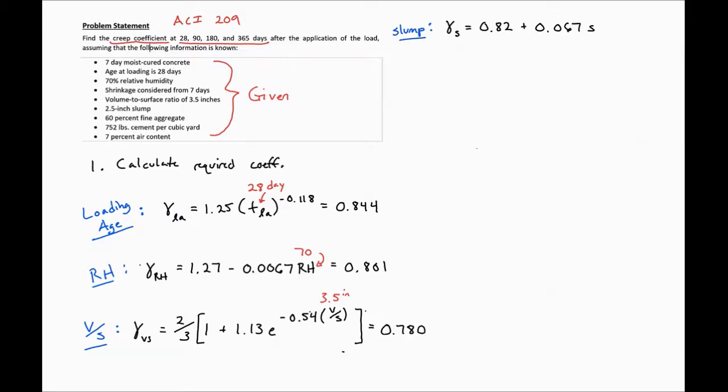We next have our slump factor. Our slump in this case is 2.5 inches. So we'll plug that in here, and we'll find our slump factor to be 0.988.